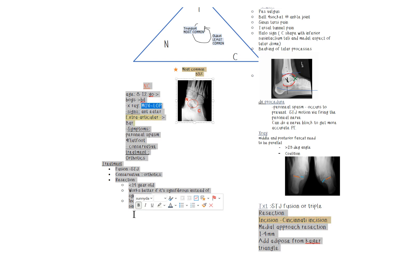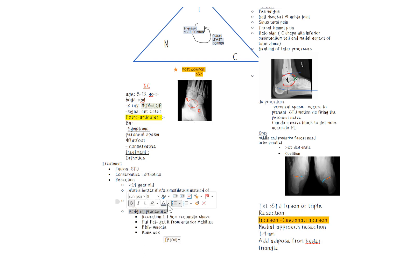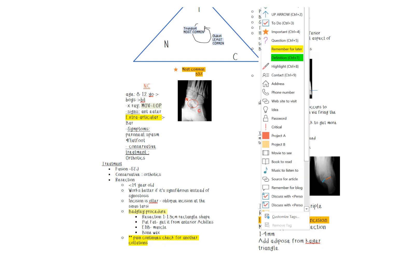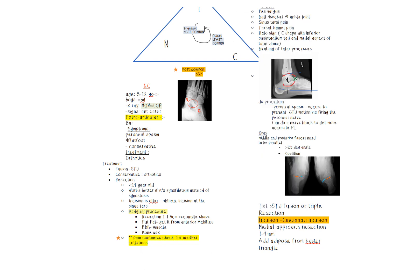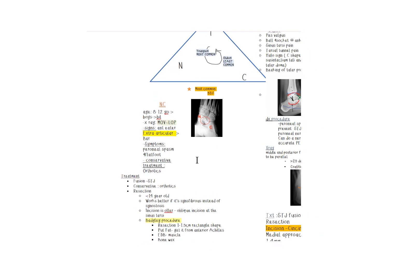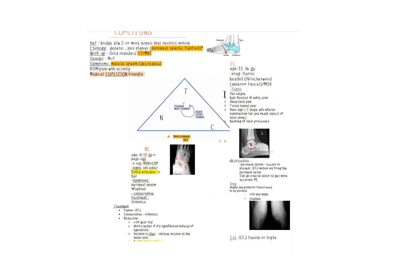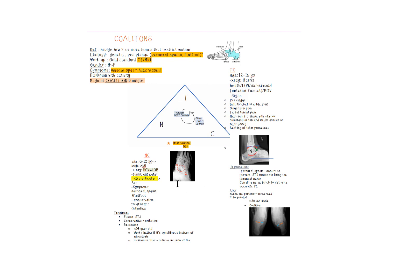You want to use an incision called the Ollier's incision. It's an oblique incision along the sinus tarsi. The procedure itself is called the Badgley procedure. They love that buzzword. It's 1 to 1.5 centimeter rectangular shape. You remove it, you can add fat to it, you can add the EDB muscle to it, you can put bone wax. This all prevents bone from growing back. Biggest thing with this one: if you notice in the question stem that the patient's complaining of still coalition-like pain, check for more than one coalition because that is definitely possible.